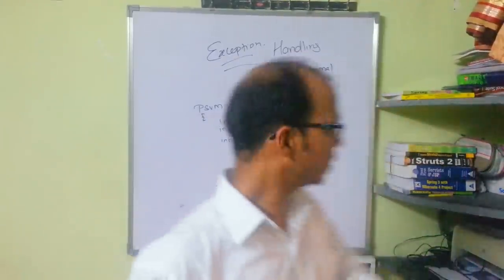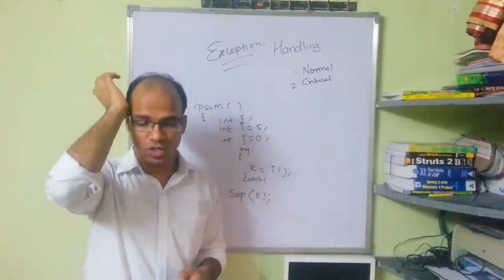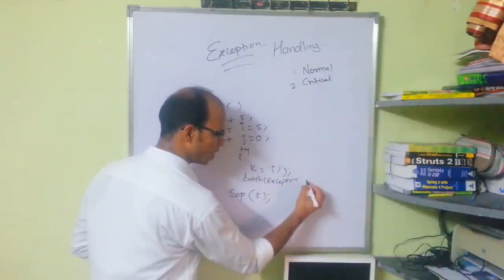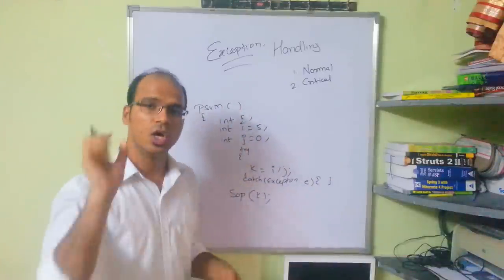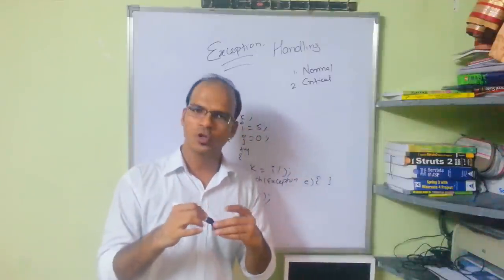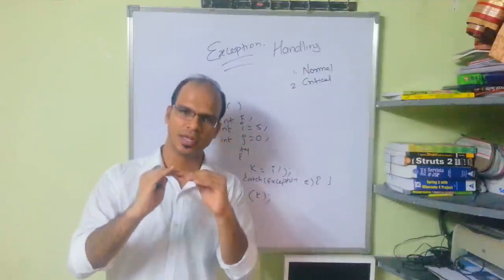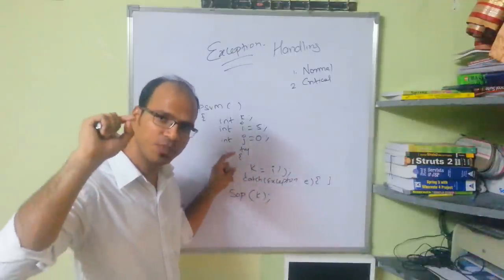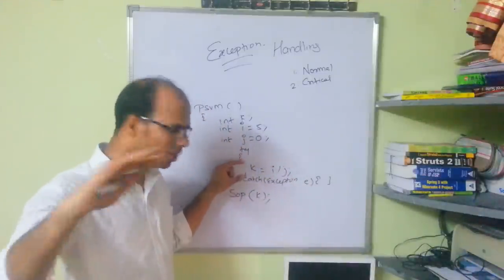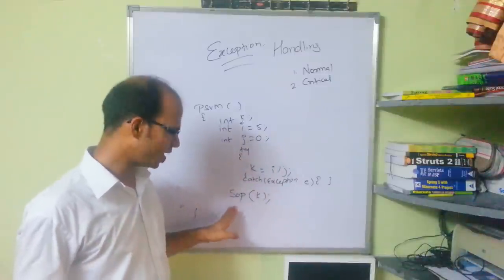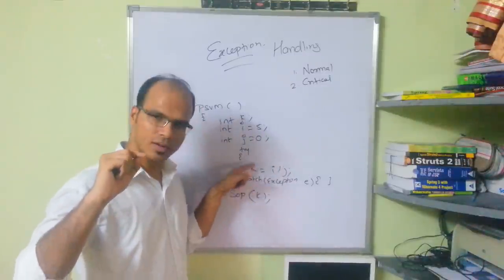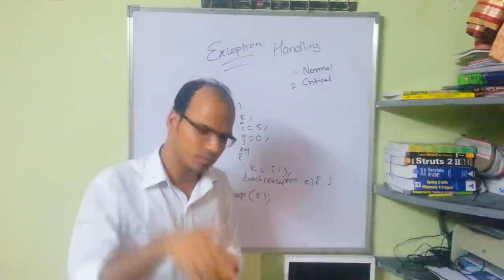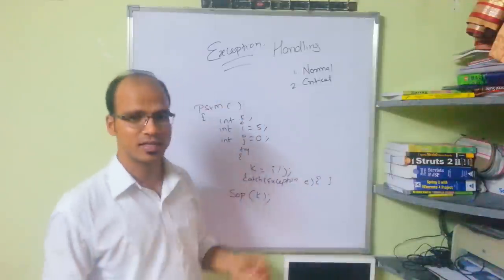If this try block throws an error, you have to catch the exception. For that, you write a catch block — catch(Exception e) — and you can write some statements inside the braces. So whenever you have a critical statement, it goes inside a try block. If it executes normally, it will skip the catch block and continue to the System.out.println. But if it throws an error, the catch block will catch the exception. This is how you handle exceptions.